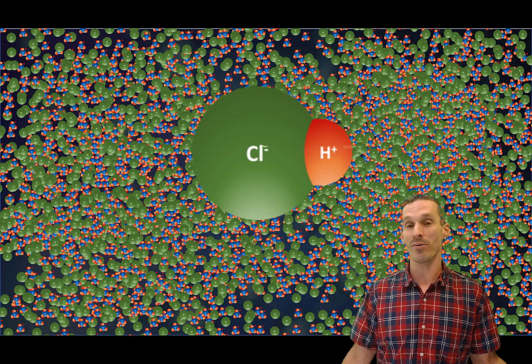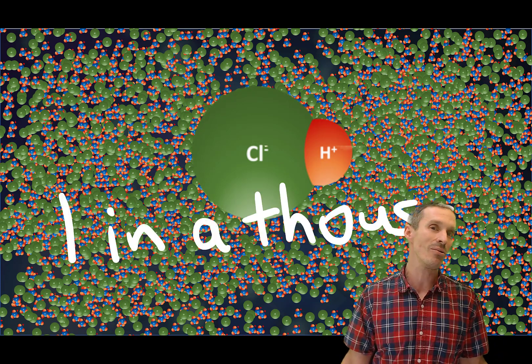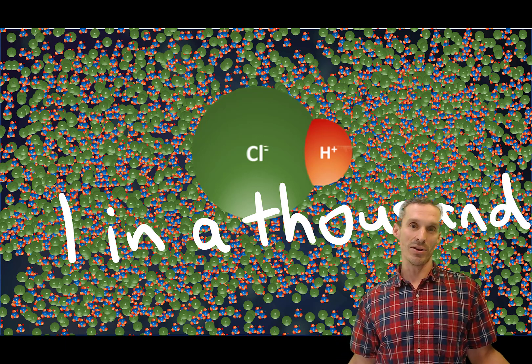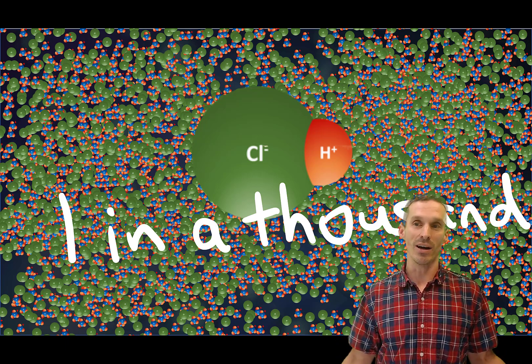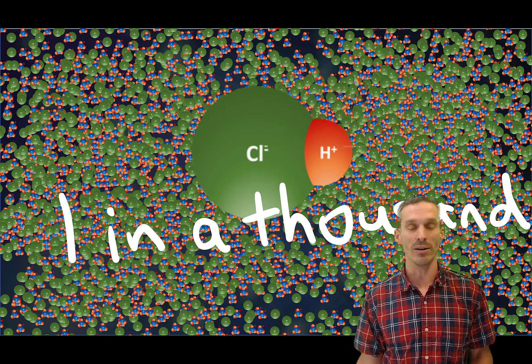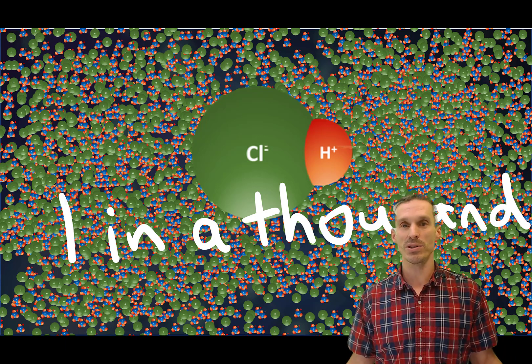Because of the Ka or the pKa value, the ratio works out to be about one in a thousand. So there is a little bit of undissociated HCl, not enough to make a difference, but just to point it out.